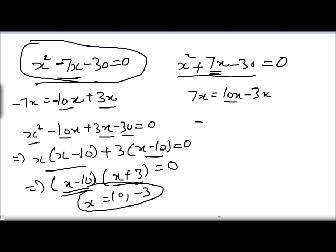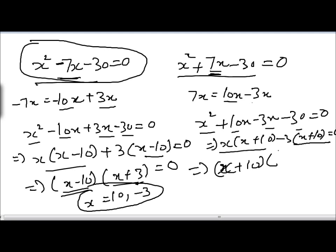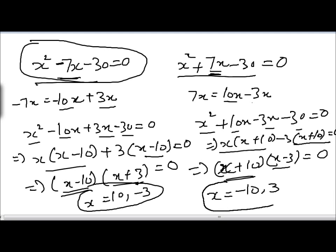Now we can also write this equation as x squared plus 10x minus 3x minus 30 equals 0. We take x common from the first two terms, and take minus 3 common from the last two terms, giving x plus 10 in brackets for both. Taking x plus 10 common from both groups gives x minus 3 in brackets, equal to 0. Setting each factor to zero: x equals minus 10 and x equals 3. This is the solution of this quadratic equation.